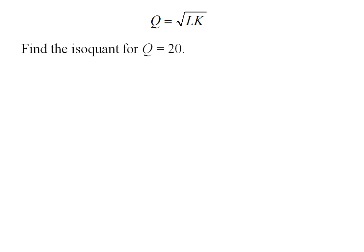Let's find the isoquant when our output level is 20. The expression for an isoquant is typically solved for K. This is because capital is always the vertical axis variable.